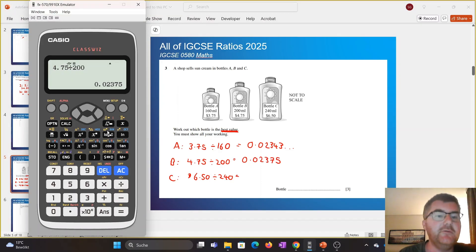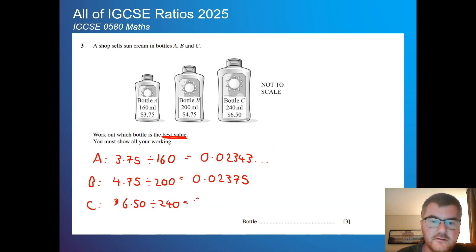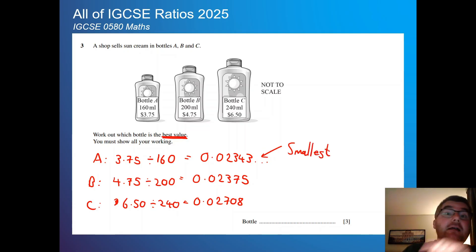And lastly, we have $6.50 divided by 240. We'll try and look for the cheapest amount you get one milliliter for. And we get here 0.02708. And essentially I'm looking for the smallest here, and so this is the smallest. So the least amount of money I'm paying for one milliliter. Therefore, bottle A is what I'm looking for.